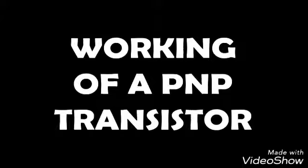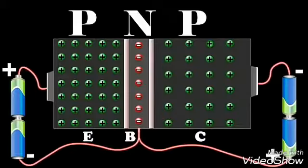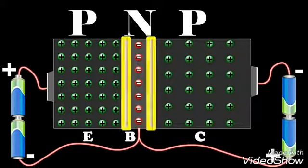Let us explain the working of a PNP transistor and see its construction. A PNP transistor is like two PN junction diodes which are placed back to back.